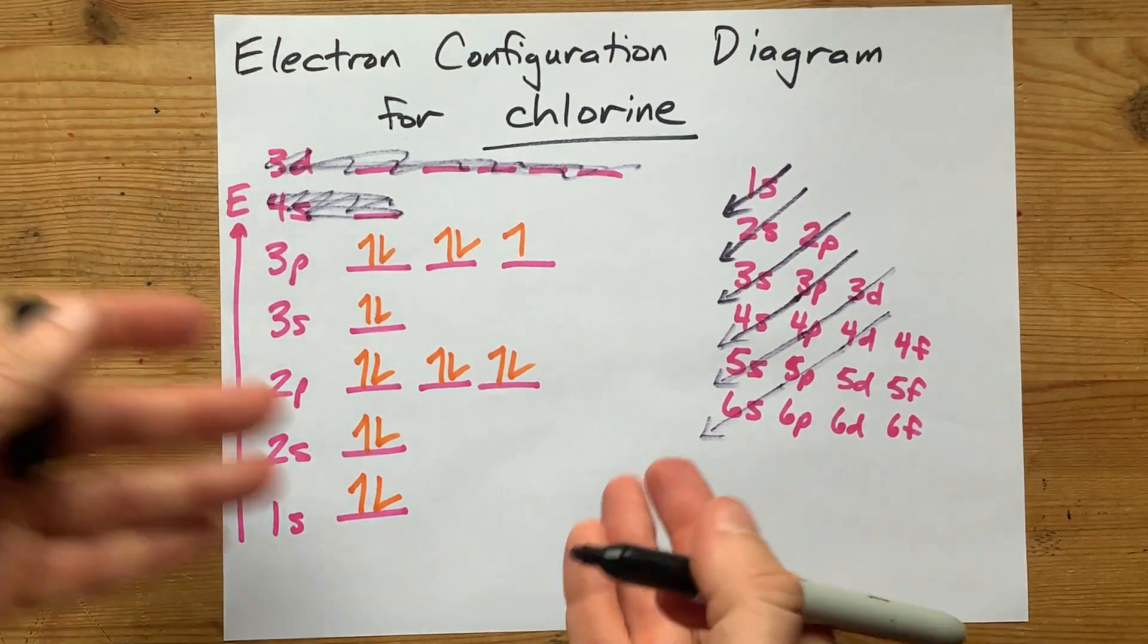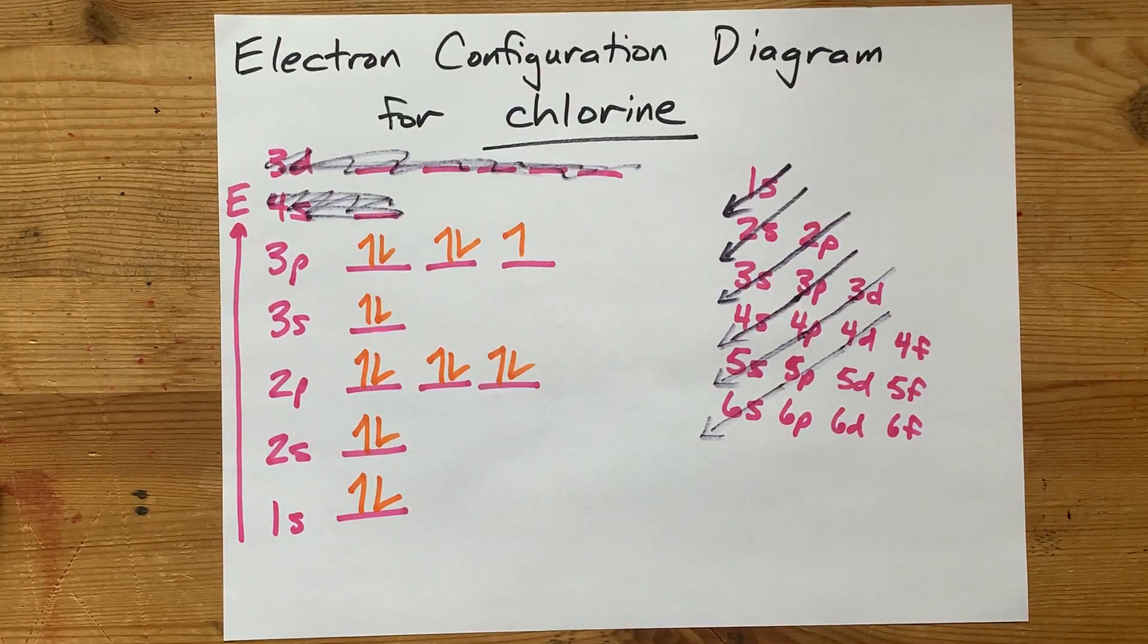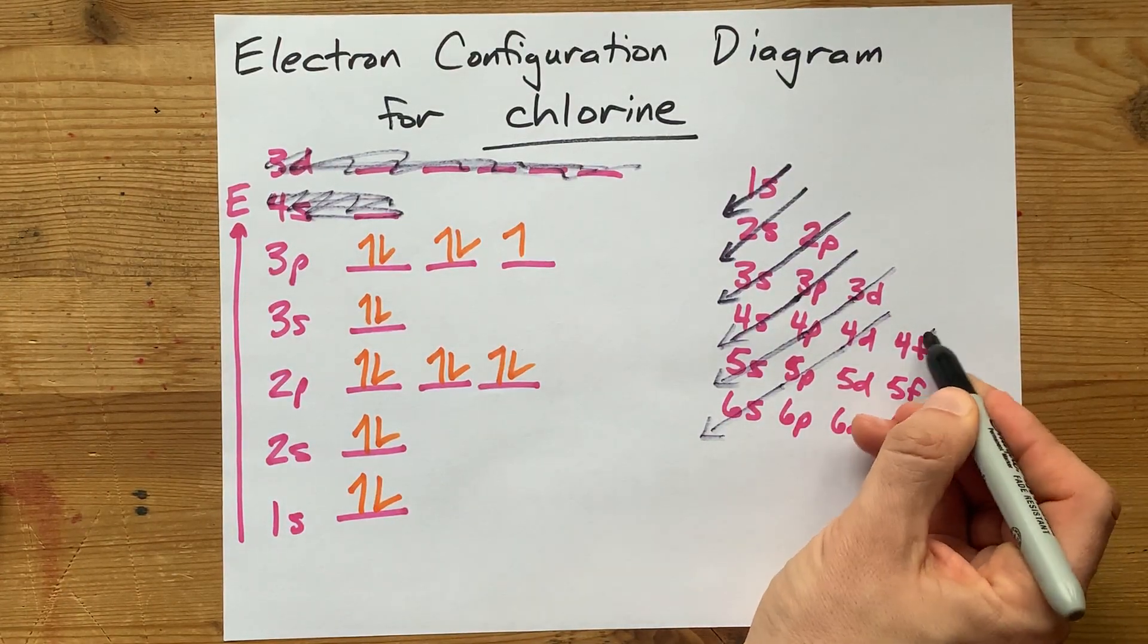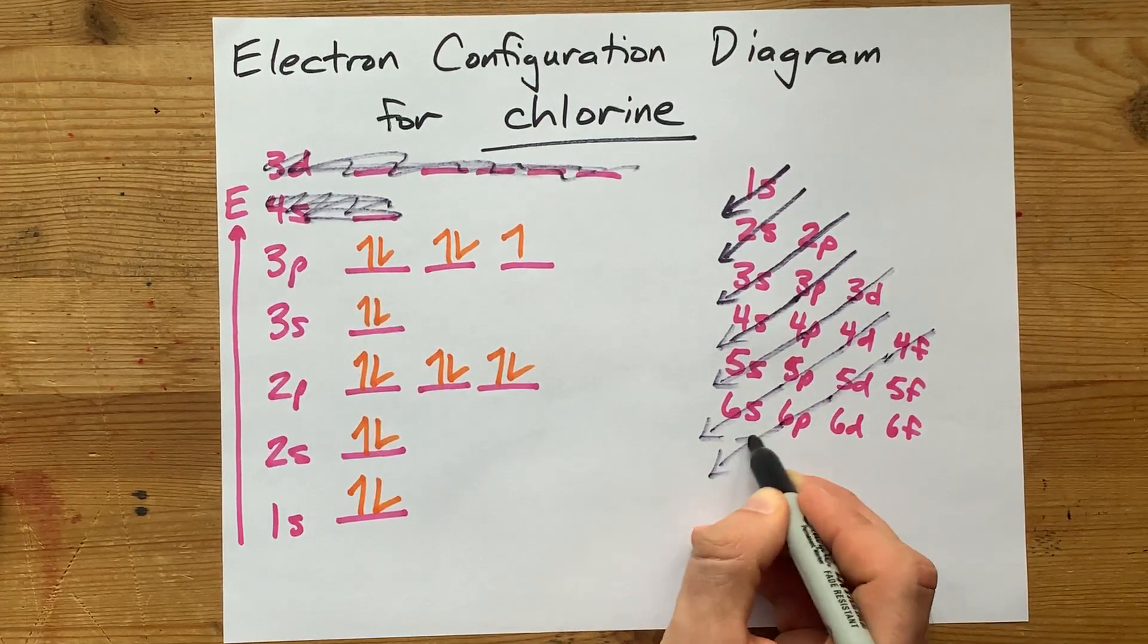Surely, your teacher's not going to ask you to do an electron configuration diagram up to cesium, are they? If they do, you start with the 4f, and then the 5d, and then the 6p, and then the 7s, etc.